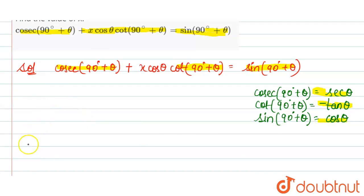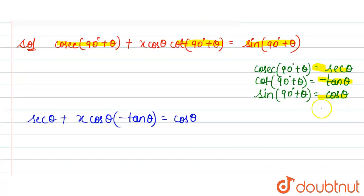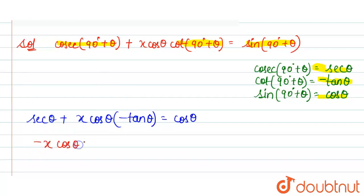So we write: −sec θ + x · cos θ · (−tan θ) = cos θ. When sec θ moves to the right-hand side, the positive sign becomes negative. We write tan θ as sin θ / cos θ, giving us: −x · cos θ · (sin θ / cos θ) = cos θ − sec θ.